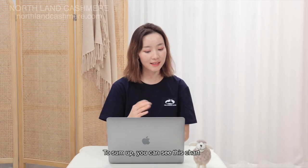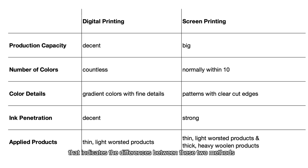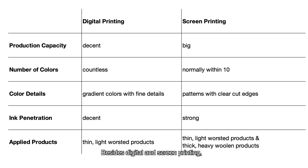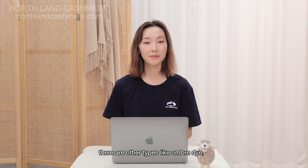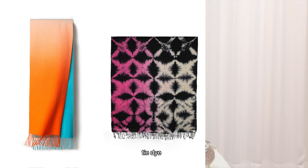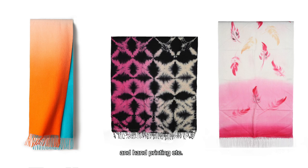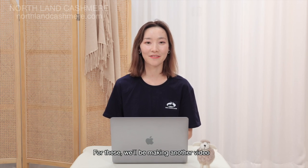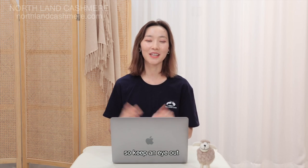To sum up, you can see this chart, which also indicates the differences between these two methods. Besides digital and screen printing, there are other types like ombre dye, tie-dye, and hand printing, etc. We will be making another video on those, so keep an eye out.